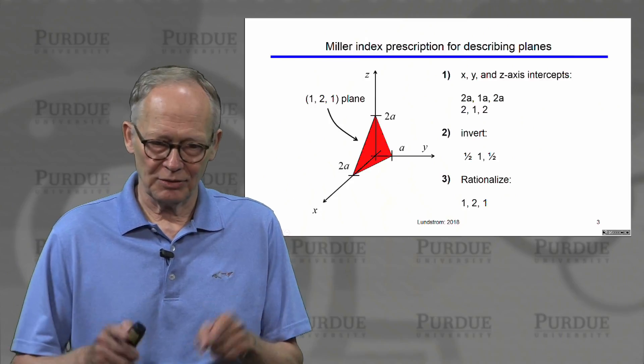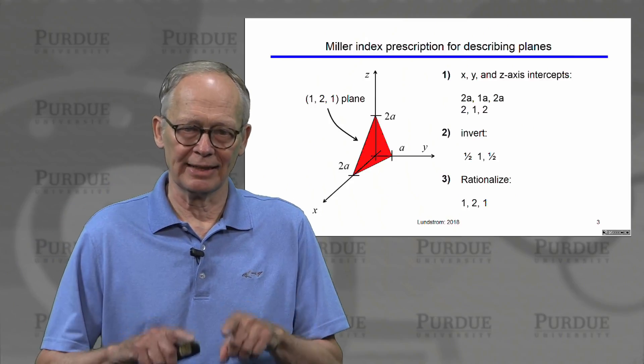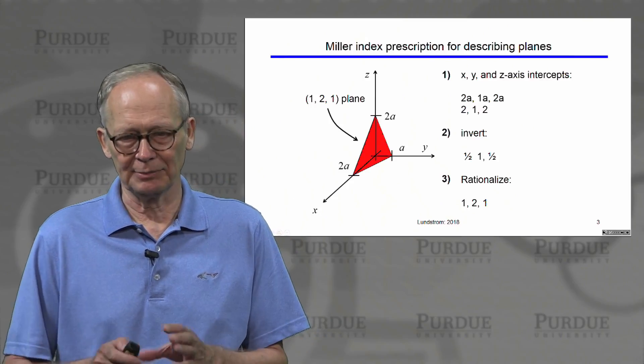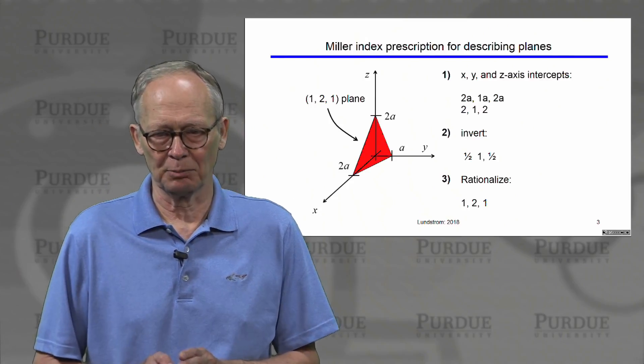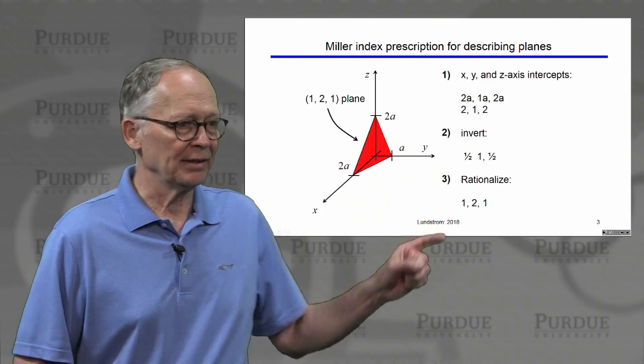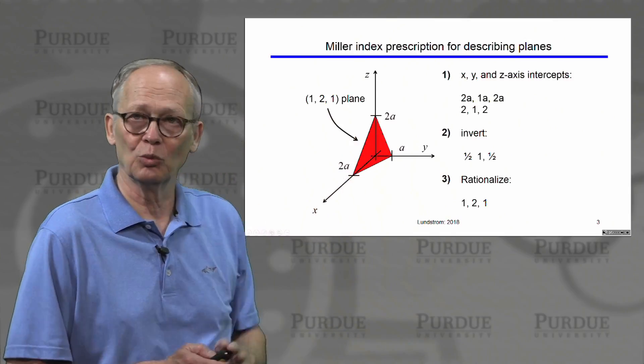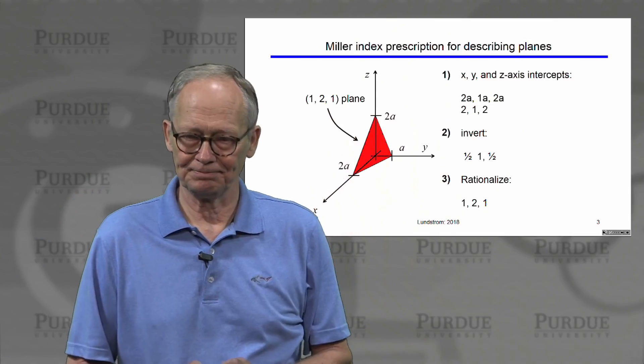We put those numbers in parentheses. The parentheses mean we're talking about a plane. This plane here we would refer to as a (1, 2, 1) plane.